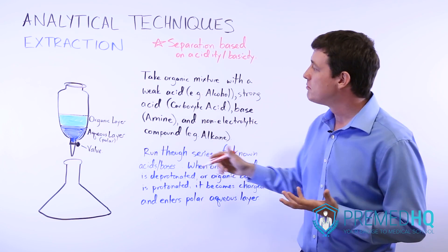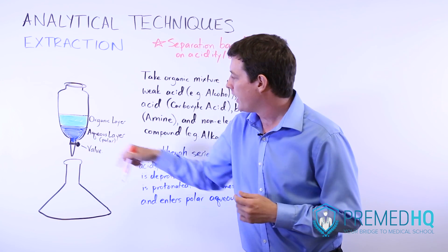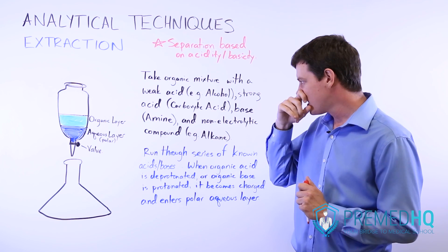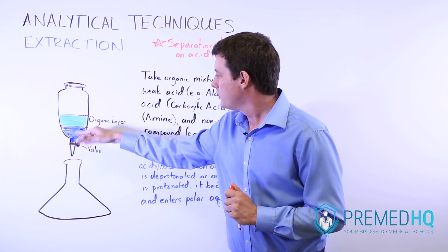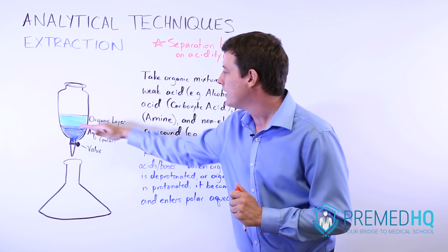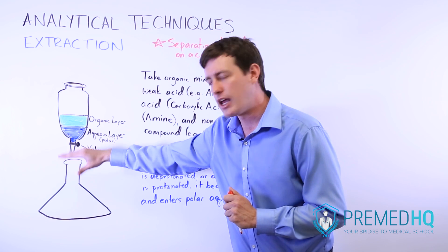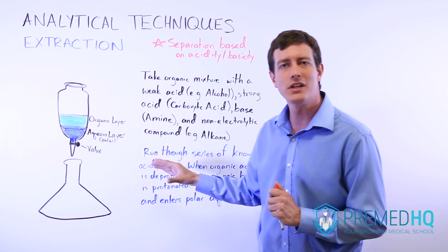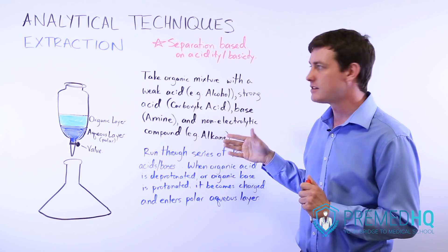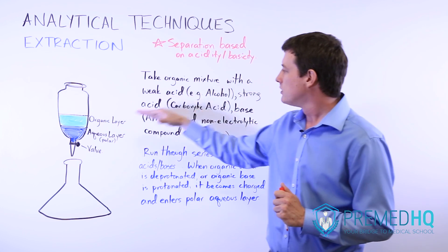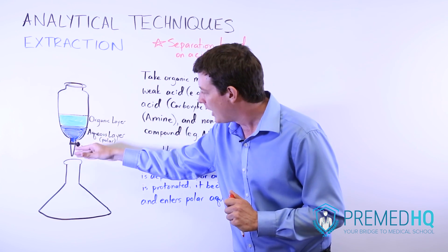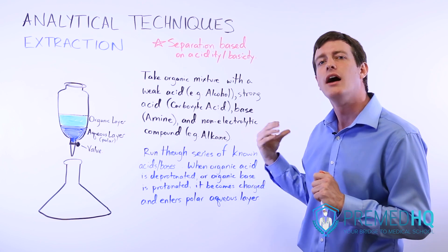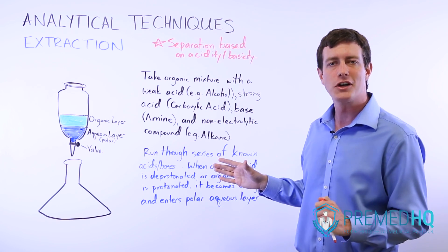You'll often see extraction set up with a valve — after running each of these acids or bases through, you use the valve to drain out the aqueous layer. Each time you're removing the one component you made react with your acid or base. For example, if you remove the alcohol, you'll have an aqueous layer of water and deprotonated alcohol, which you collect in a separate flask as a sample containing only that compound.